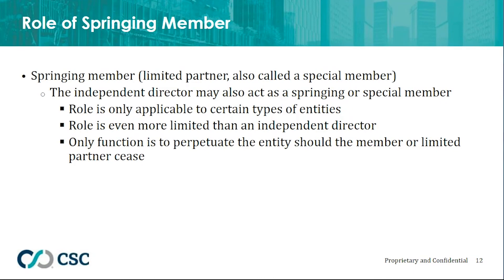The springing member has many names — it can be a springing member, special member, or springing limited partner, depending on the organizational type. This role is only applicable to certain entities such as a partnership or an LLC. The role is even more limited than an independent director, as the springing member has no voting duties. The only function is to perpetuate the entity should the member or limited partner cease to be a member through a member cessation event. Basically, the springing member is there to keep the lights on — a seat warmer until another member can be appointed to keep the company in existence and protect that asset.